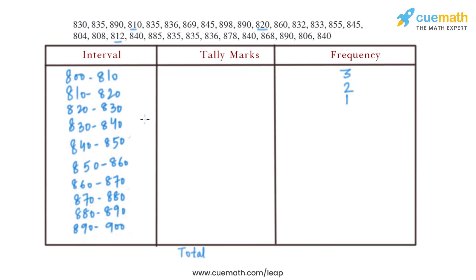Between 830 and 840, counting the values: 830 is 1, 835 is 2, then 3, 4, 5, 6, 7, 8, and 9 — so there are 9 values between 830 and 840.